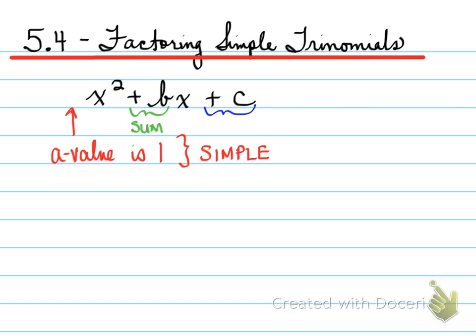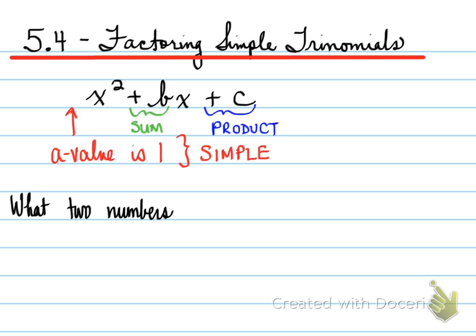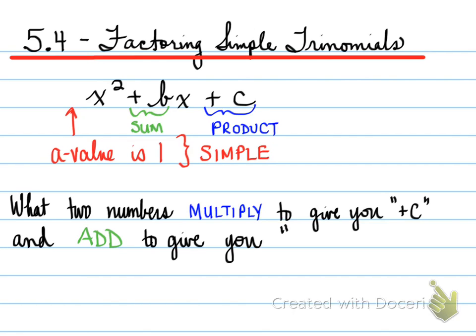B is known as the sum. So the value next to the x is known as the sum. The value next to the c is known as the product. So what we're trying to do is ask yourself the following question: what two numbers multiply — that's your product — to give you c, and add to give you b — that's your sum. What two numbers multiply to give you the product and add to give you the sum? That is the question you ask yourself each and every single time when you're factoring.